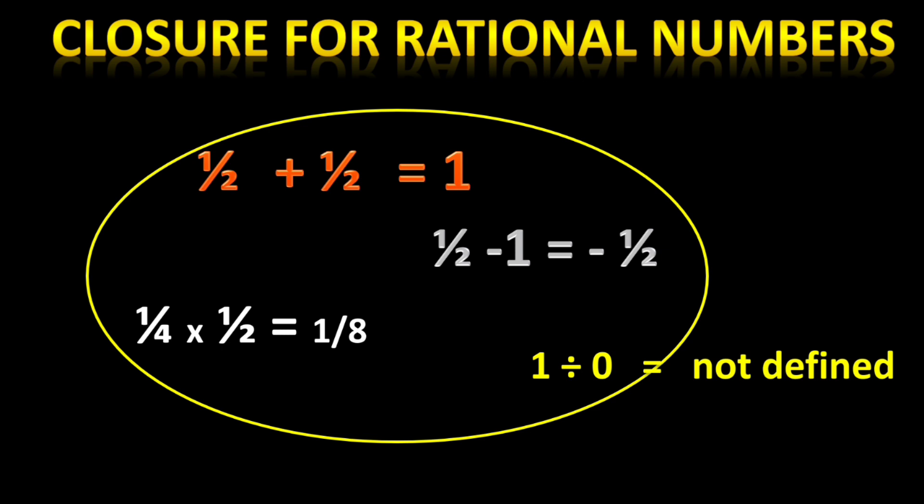When we are dividing, there is one exception. When we divide any two rational numbers, the quotient is always a rational number, but in one case — whenever we divide by 0 — we do not get a rational number, because 1 divided by 0 is not defined. So addition, subtraction, and multiplication are closed for rational numbers, but division is not closed for rational numbers either.